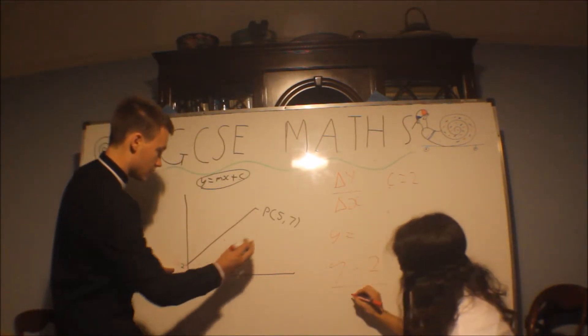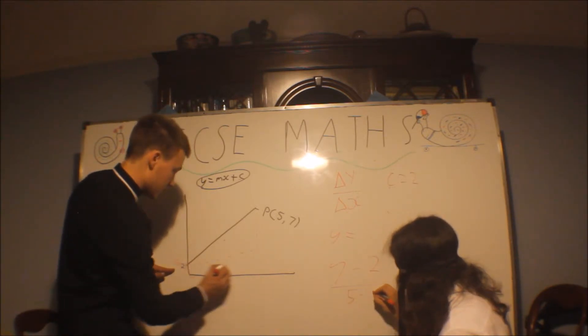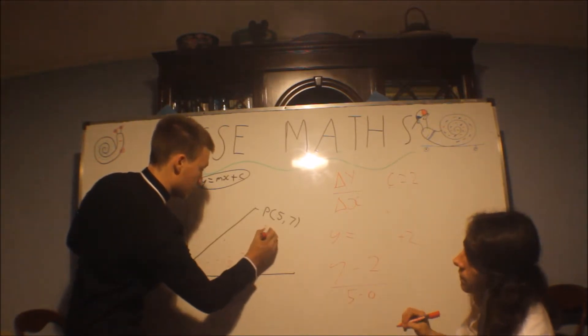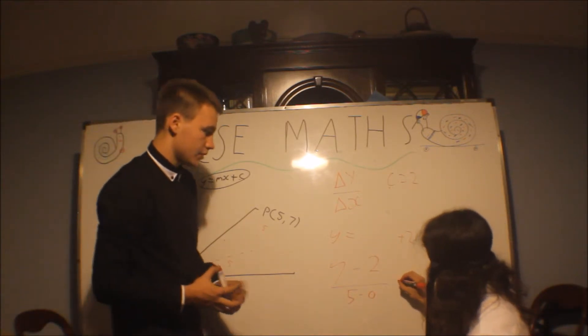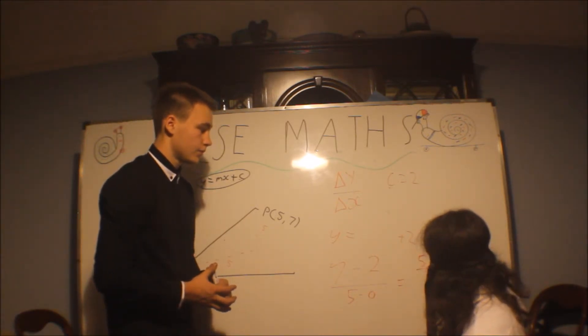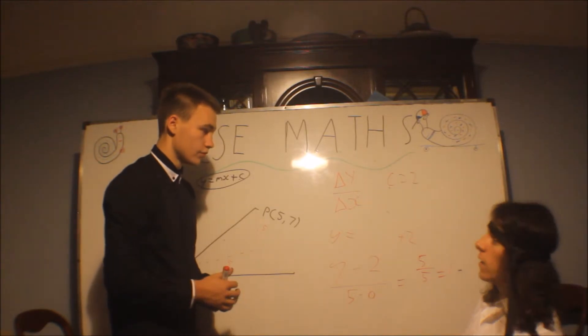It's just 5 minus 0, which is... 0 to 5. This is 5 units across, this is 5 units up. Absolutely. So it becomes 5 over 5, which is... It's just 1, and that's our gradient, which is quite a nice gradient.